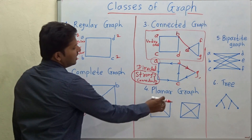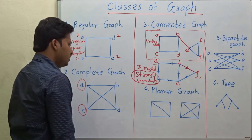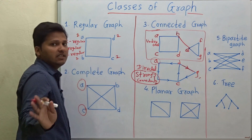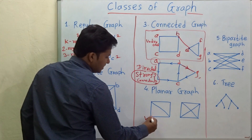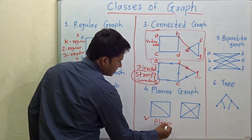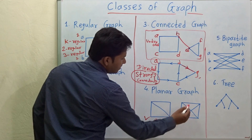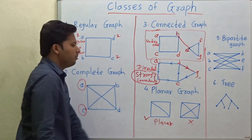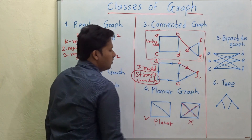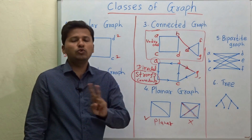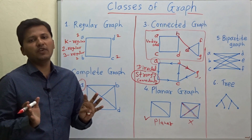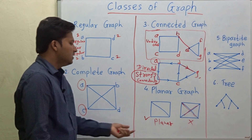The next class is planar graph. In a planar graph, no two edges should intersect each other. This is a planar graph, but this other one is not a planar graph because two edges intersect. In a planar graph there should be no intersection of any edges. Such a graph is called a planar graph.